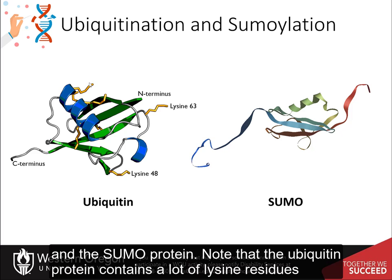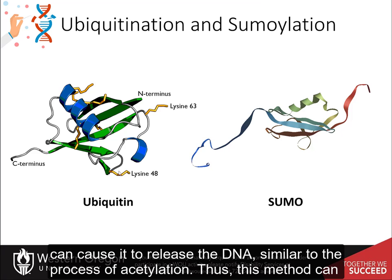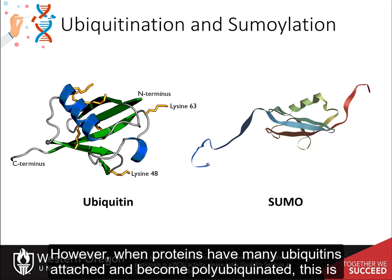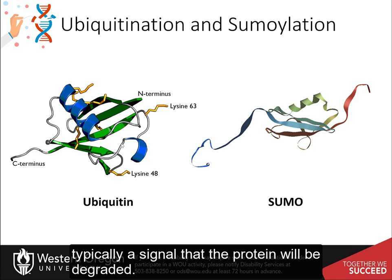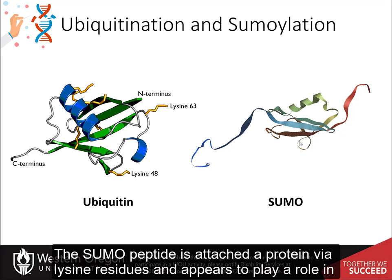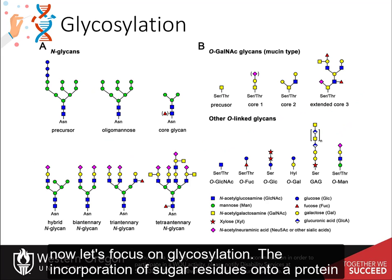Two of the most common small peptides serving this function are the ubiquitin protein and the SUMO protein. The ubiquitin protein contains many lysine residues and is a fairly basic peptide. Attaching a single ubiquitin peptide onto a histone protein can cause it to release DNA, similar to acetylation, and can thus increase gene transcription. However, when proteins have many ubiquitins attached and become polyubiquitinated, this is typically a signal for protein degradation. The SUMO peptide is attached via lysine residues and appears to play a role in nuclear functions and potentially neuronal processes as well.